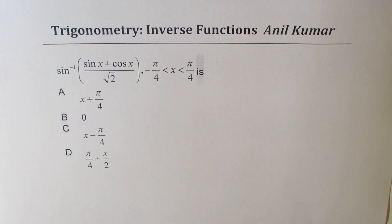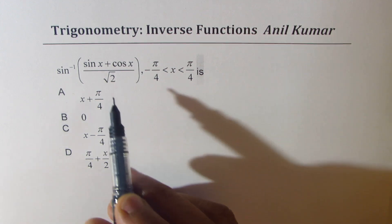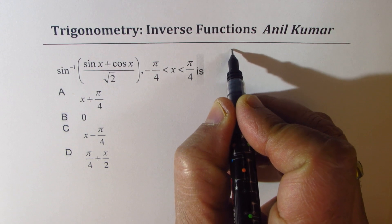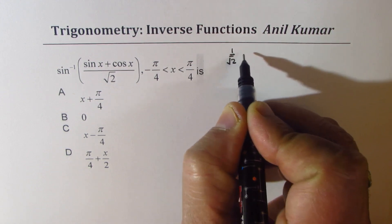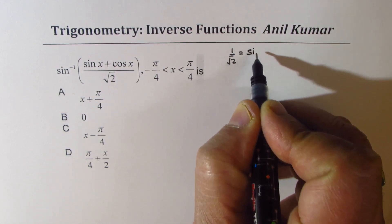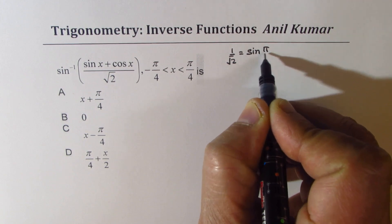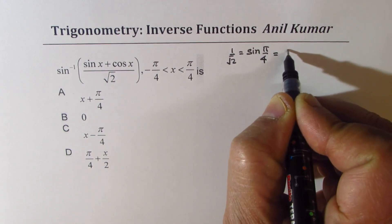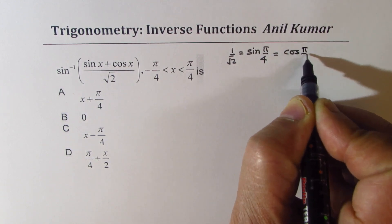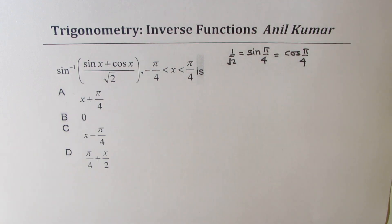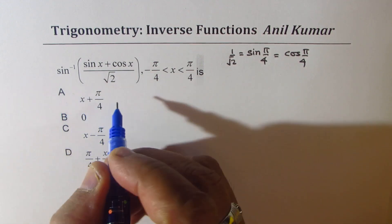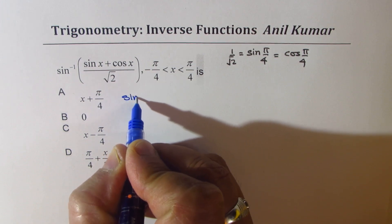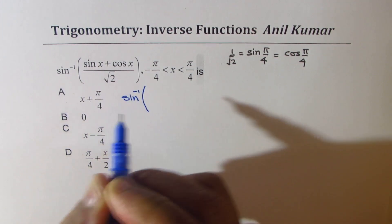Now, 1/√2 can be replaced by sin(π/4), and it also equals cos(π/4). That is the substitution I'm going to make here. We'll rearrange and get sine inverse of some sine function.